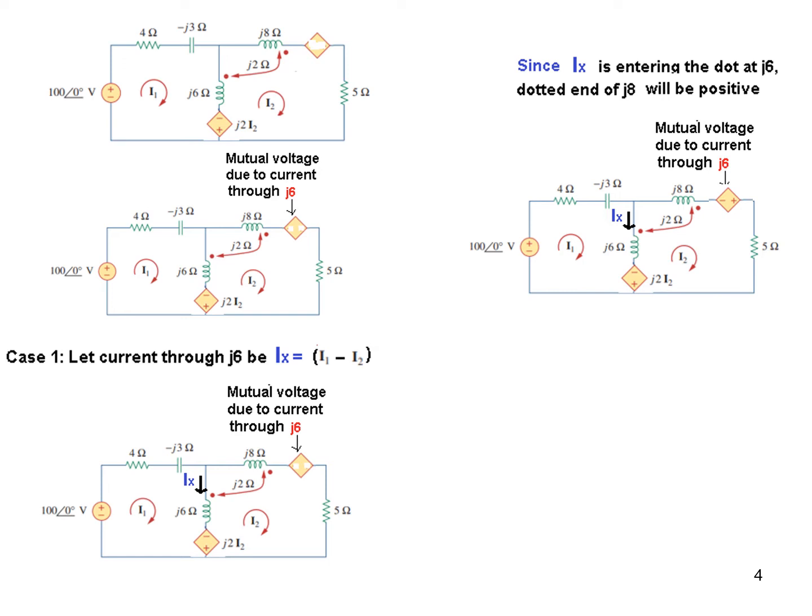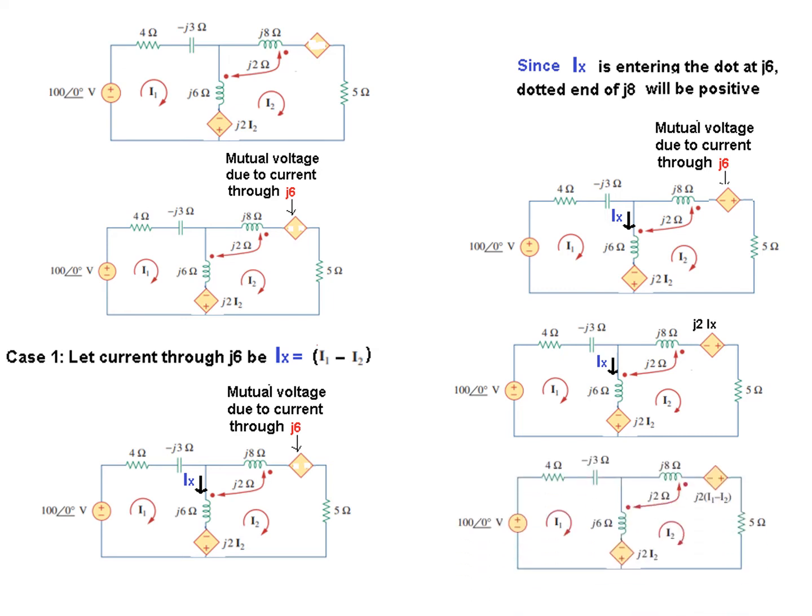And then what about the value? Now what is it? It will be straight away we can say that it will be J2 times Ix, because Ix is the current flowing through J6. So it will be J2 Ix. But what is Ix? If you see from this circuit, Ix is nothing but I1 minus I2. And so we can write J2 I1 minus I2 instead of J2 Ix. So this is the circuit. This was for case number one.